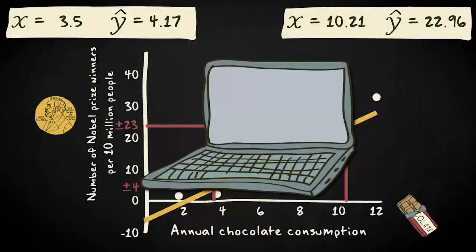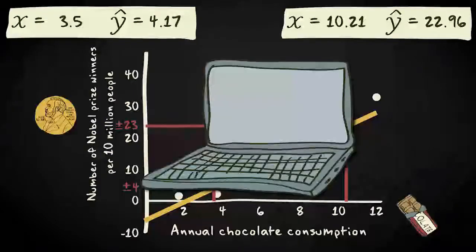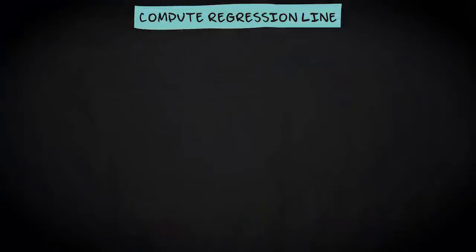Usually, the computer finds the regression line for you, so you don't have to compute it yourself. However, when you know the means and standard deviations of your variables, and also the corresponding Pearson's r, you can compute the regression equation by means of two formulas.